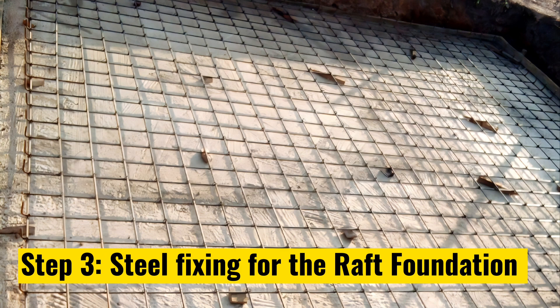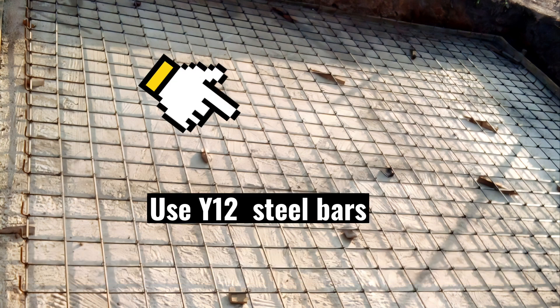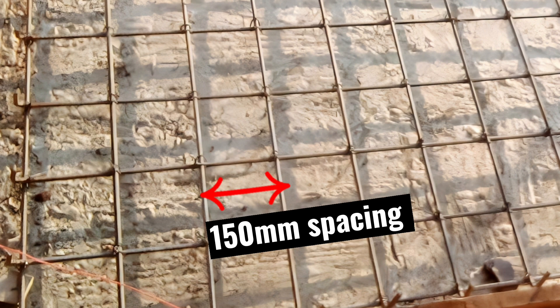The third step is to do steel fixing for the rough foundation. Consider Y12T12 steel bars at a spacing of 150mm center to center for all reinforcements.